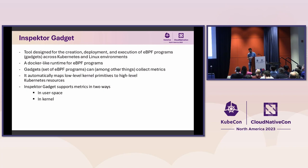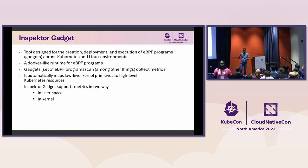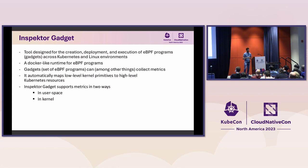Another interesting thing about Inspector Gadget: when we get information from the kernel we usually get low-level data like PID and user ID, but there is no container concept in the kernel. Inspector Gadget provides that mapping, adding context about container name, pod name, namespace, and so on. Regarding metrics specifically, there are two different ways to collect metrics in Inspector Gadget: one is in user space and the other is in kernel space.